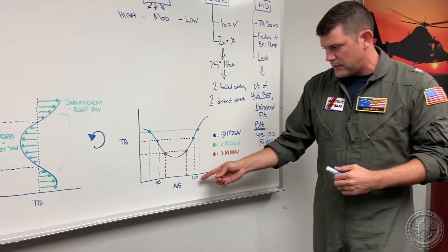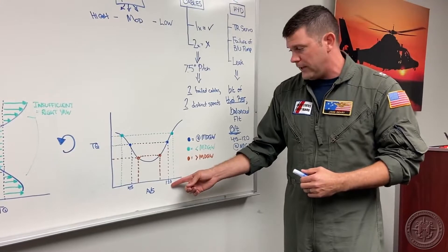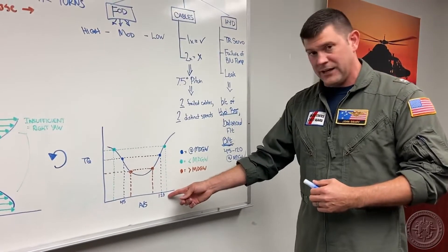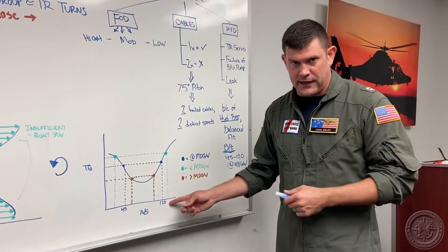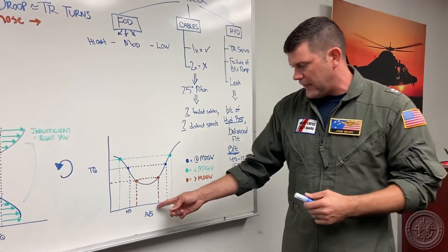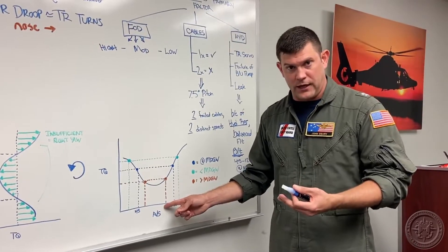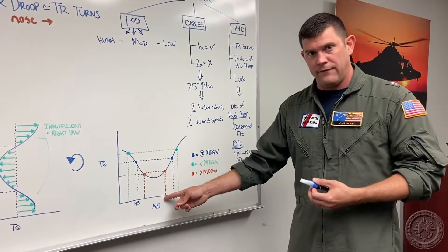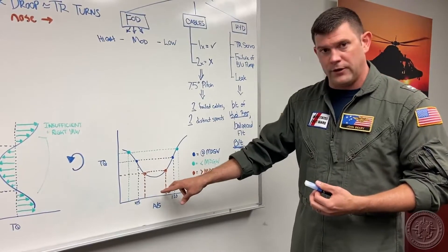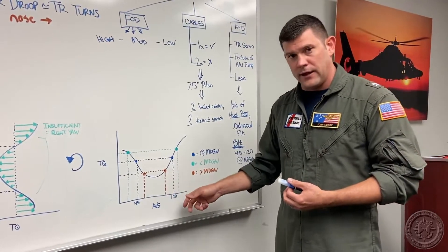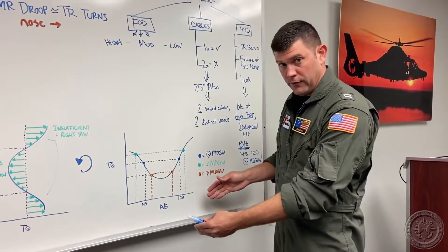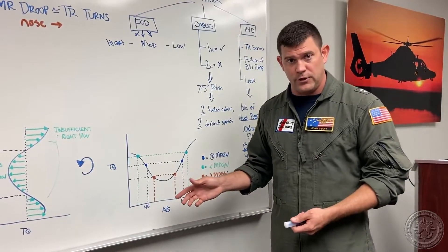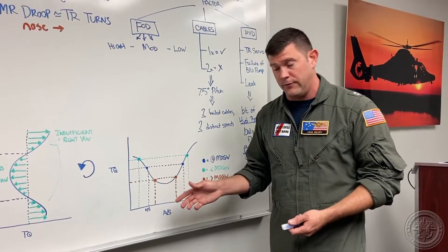The blue line indicates performance at mission design gross weight, whereas the green line indicates performance if you are less than mission design gross weight — say 18,000 pounds — and the brown indicates what it looks like if you are above mission design, say 21,000 pounds. For heavier aircraft, the performance window narrows; the lighter the helicopter, the wider the performance window. In other words, the lighter you are, the slower you can get when you perform your roll-on landing in the event of a cable malfunction.